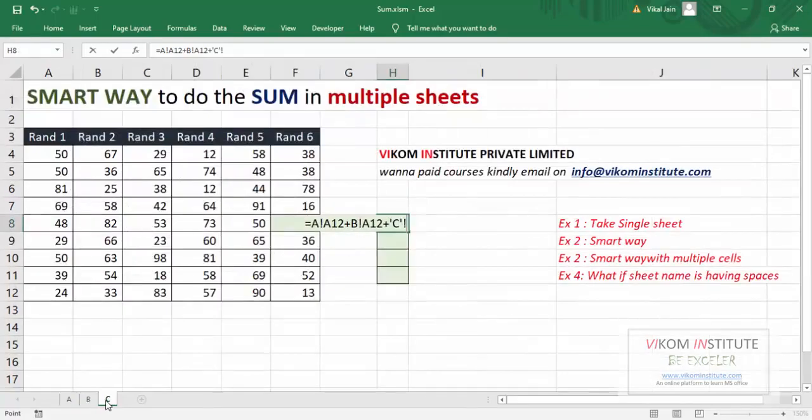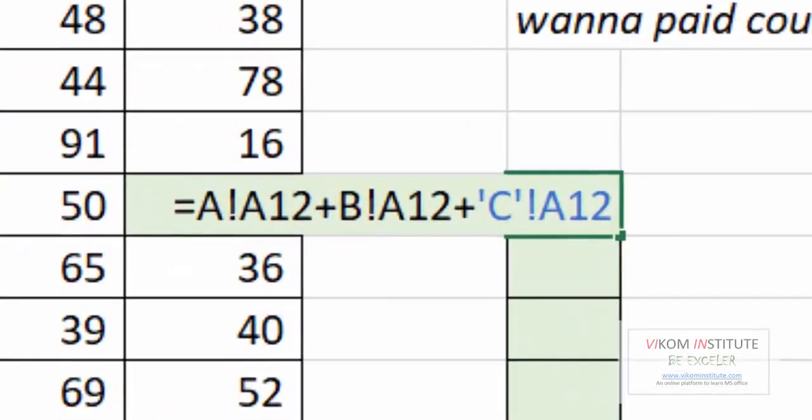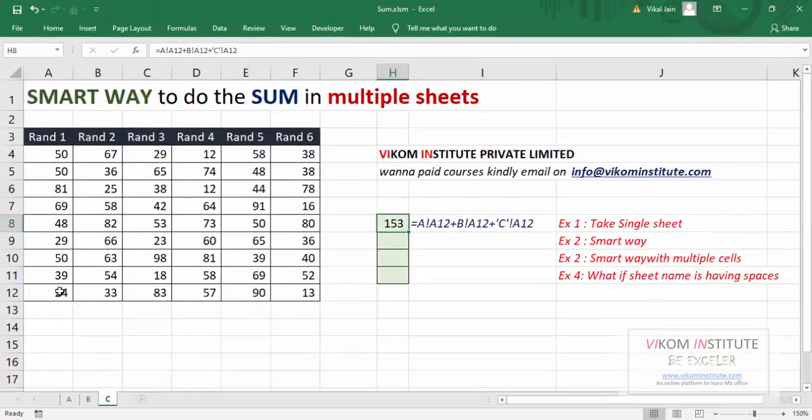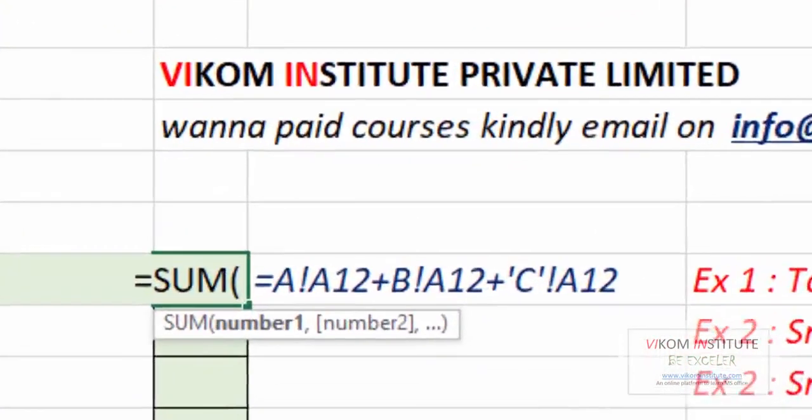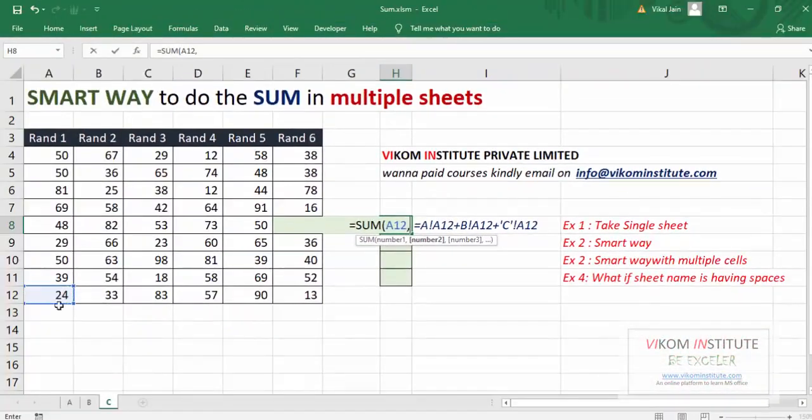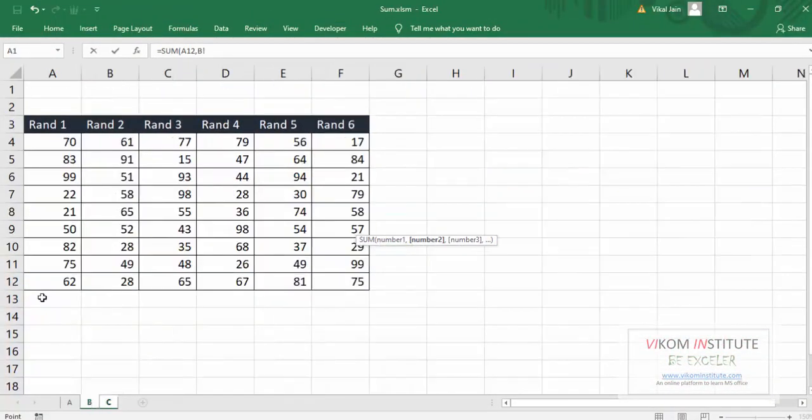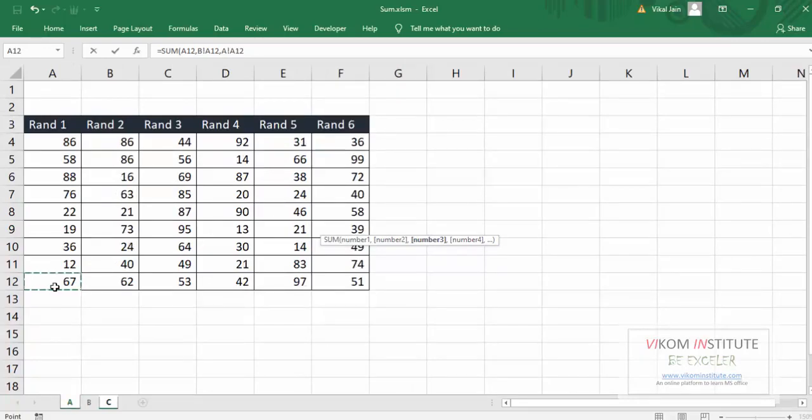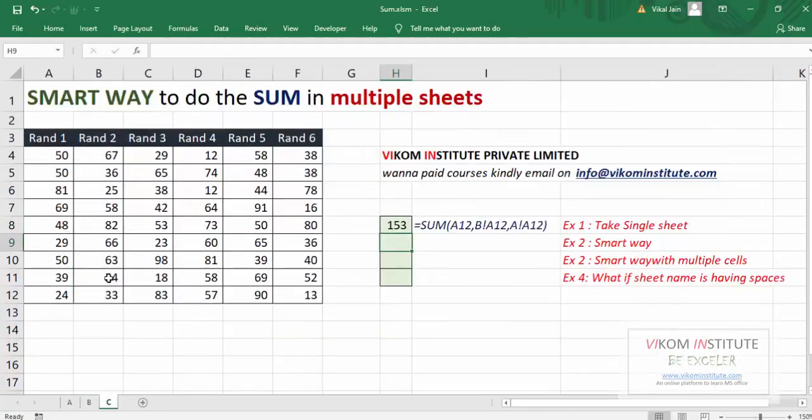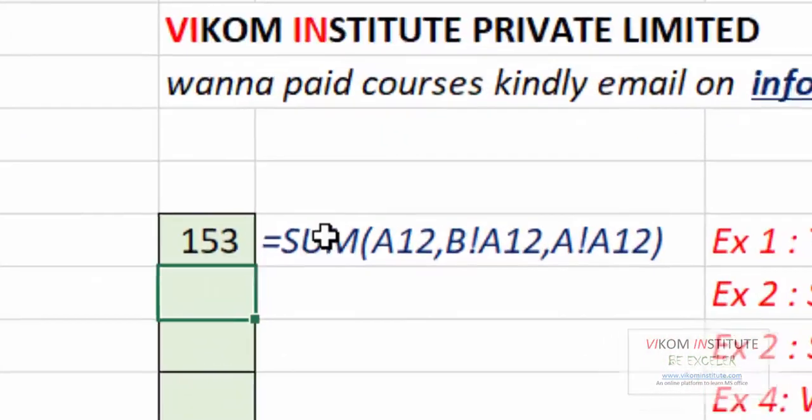So this is the manual process. Even you can use SUM function - this comma, then this one comma, then this one. But this is manual process. Here we have only three sheets, so the task is very easy.